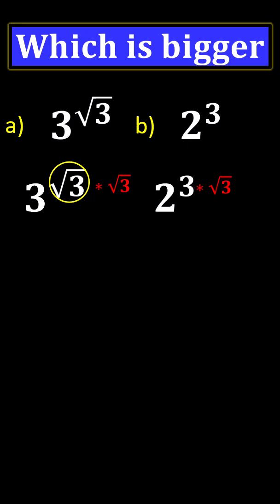Square root of 3 times square root of 3 is 3. 3 cubed is 27. So 2 to the power of 3 times root 3 is 2 to the 3 root 3, which is the same as 2 to the 3 times square root of 3.